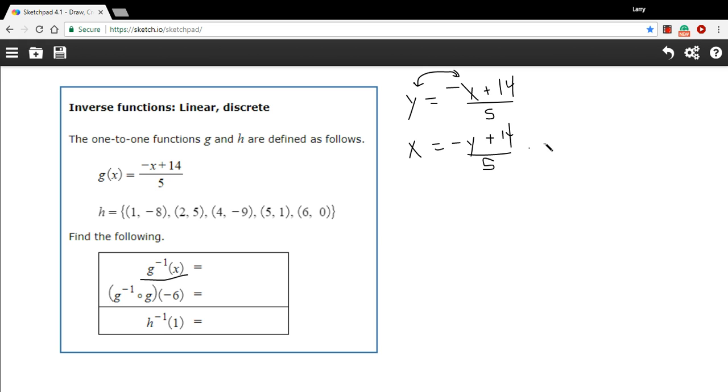I'm going to start that process by multiplying both sides by 5, just to get rid of the fraction. So we've got 5x equals negative y plus 14. I'm going to subtract 14 from both sides.